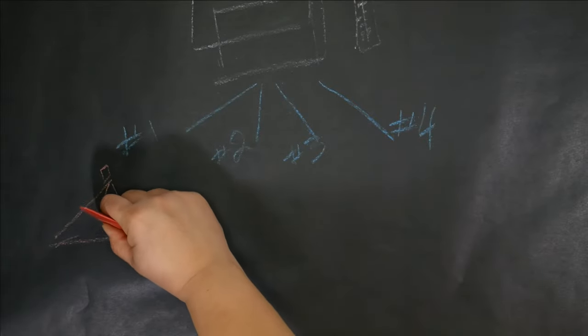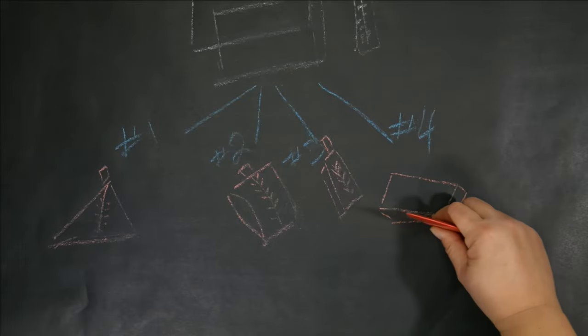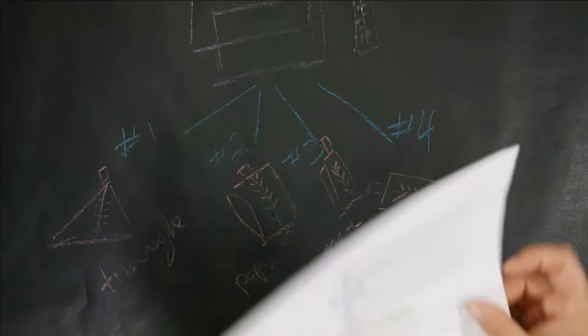First one will be a triangle. Then we have a popcorn, a flat box, and a top box. Yeah, that's the plan.